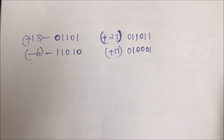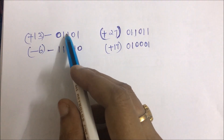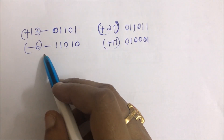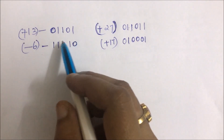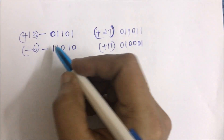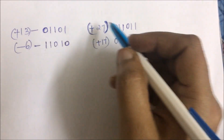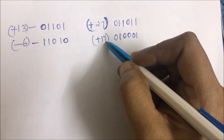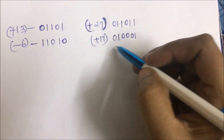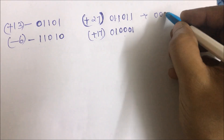A small point to be noted: the number of bits in the multiplicand and multiplier must be an even number. In the example we solved, +13 is 5 digits and -6 is 4 bits extended to 5 bits. But if the given numbers already have 6 bits, as in the example +27 and +17, we cannot solve using 6 bits alone — we must extend to 8 bits by appending 2 more zeros.